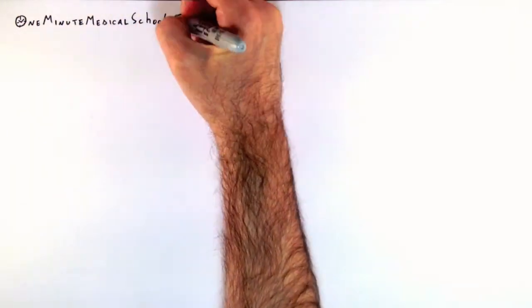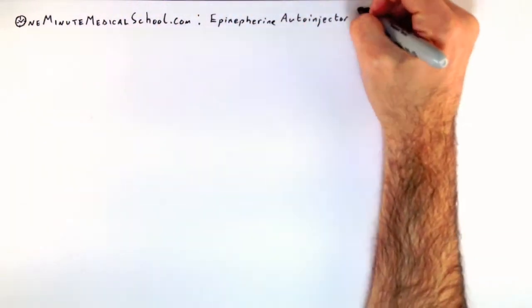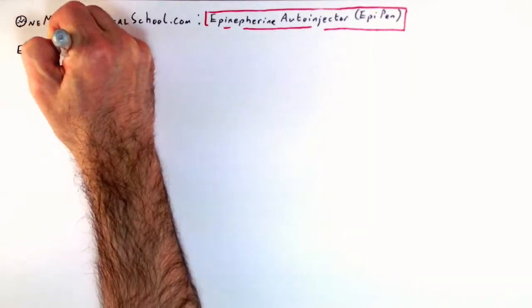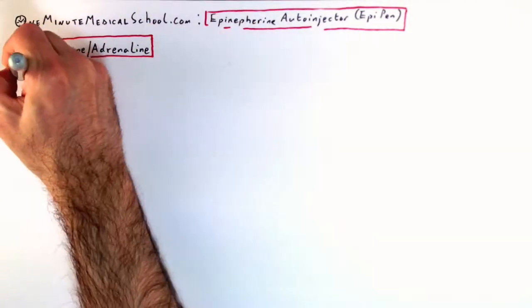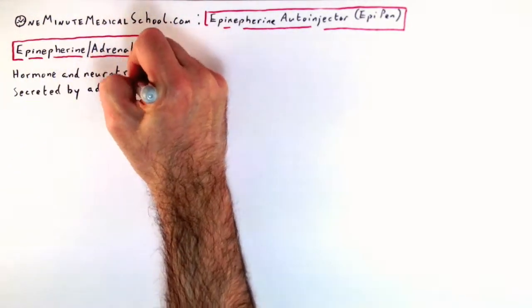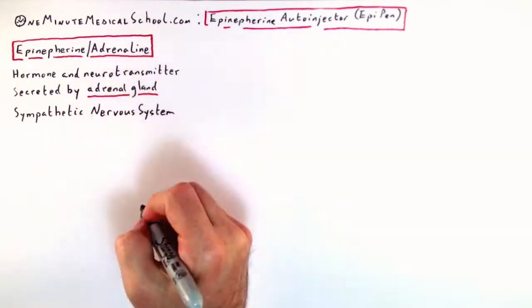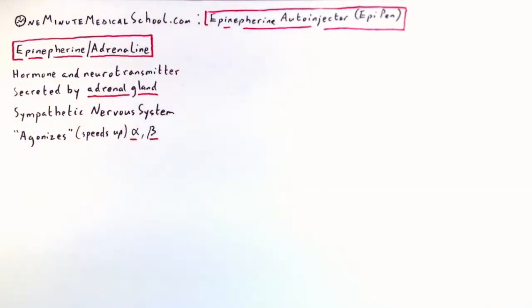A viewer asks how the EpiPen works. It works mainly because it contains epinephrine, also known as adrenaline, which is a hormone and neurotransmitter secreted by the adrenal gland that affects alpha and beta receptors of the sympathetic nervous system.